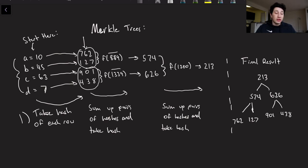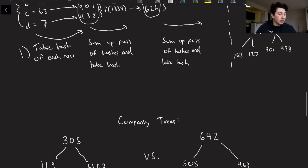So now finally we have 574 and 626, and then we're going to do that same step one more time until we get to one root node, right? So we take these two, we sum them up, conveniently they sum up to 1200, we take the hash of them, and let's imagine that spits out 213, which leads us to our final result over here on the right. So 213 is going to be our root node of the Merkle tree with two children as 574, 626, and then of course we're going to have our leaf nodes which are 762, 127, 901, and 438.